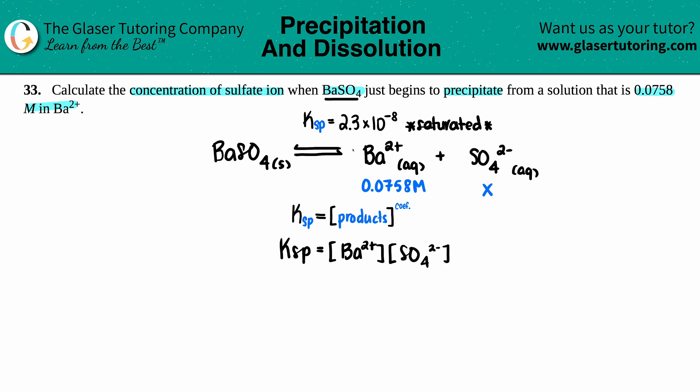The barium they told us was 0.0758, the sulfate is what we're looking for so that's x, and the Ksp is what we found in the back of the textbook: 2.3 times 10 to the negative 8th.